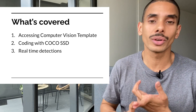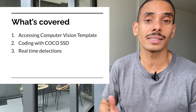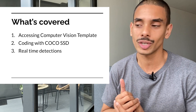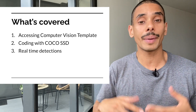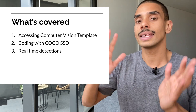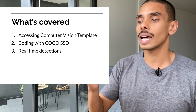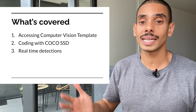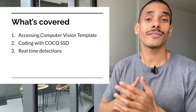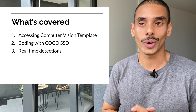First up, we're going to be accessing our computer vision template - a template I've set up on GitHub that's going to allow you to kickstart your journey in building your real-time object detection app. We're also going to be setting up and coding with COCO SSD, leveraging the pre-built TensorFlow.js model to make detections. And last but not least, we're going to make real-time detections using our app and our webcam to detect different objects within our frame.